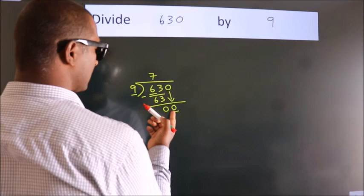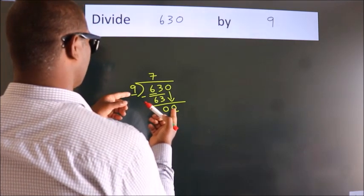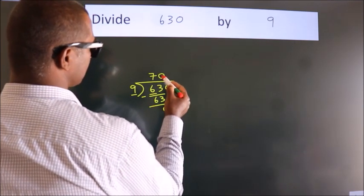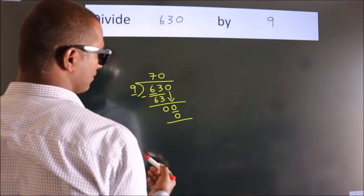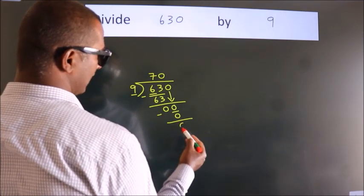When do we get 0? In 9 table. 9 times 0, 0. Now, we subtract. We get 0.